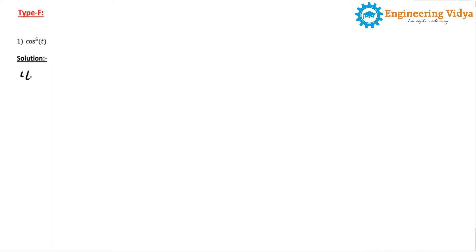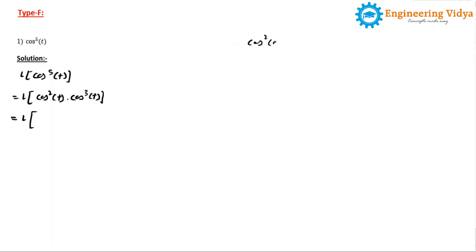To find the Laplace transform of cos⁵(t), we separate it as cos²(t) multiplied by cos³(t). The cos²(t) can be replaced by the half-angle formula: cos²θ = (1/2)(1 + cos 2θ). And cos³(t) can be replaced by the formula: cos³θ = (1/4)(3cosθ + cos 3θ).